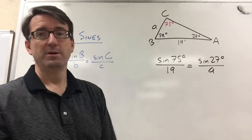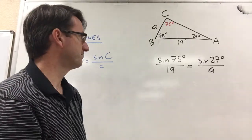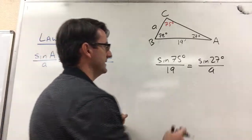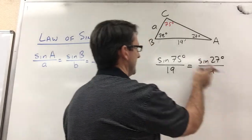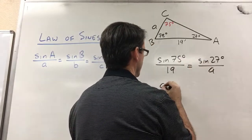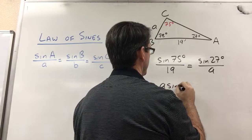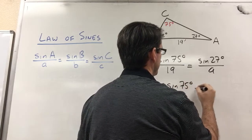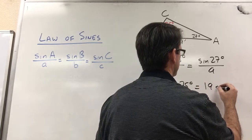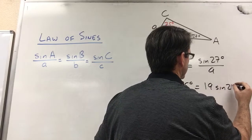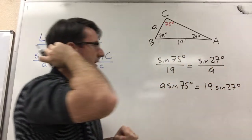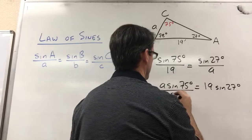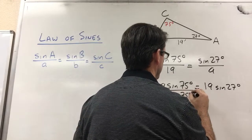And now we need to solve for A. In order to do that, let's cross multiply here. We're going to get A times sine of 75 degrees is equal to 19 times the sine of 27 degrees. And then to get A by itself, we're going to divide both sides by the sine of 75 degrees.